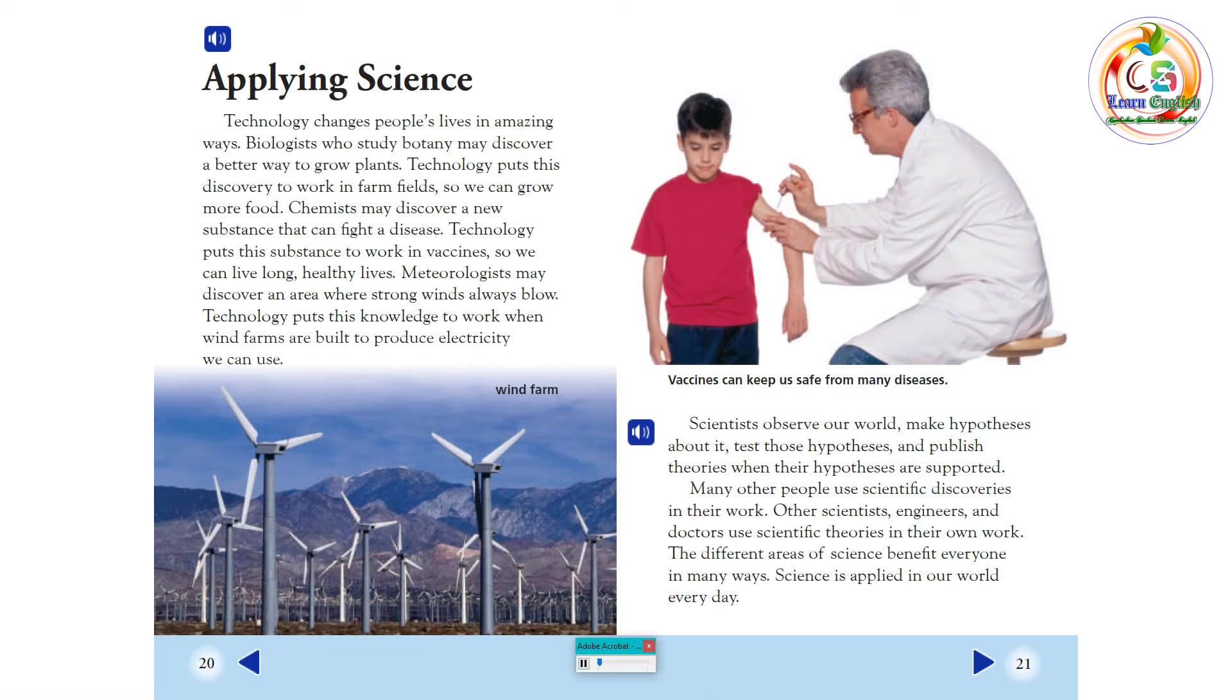Applying Science. Technology changes people's lives in amazing ways. Biologists, who study botany, may discover a better way to grow plants. Technology puts this discovery to work in farm fields, so we can grow more food. Chemists may discover a new substance that can fight a disease. Technology puts this substance to work in vaccines, so we can live long, healthy lives.